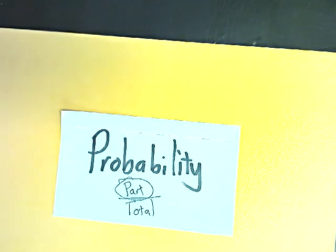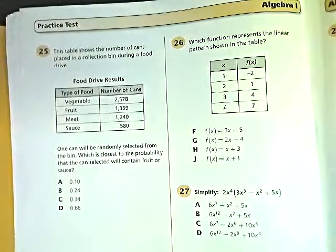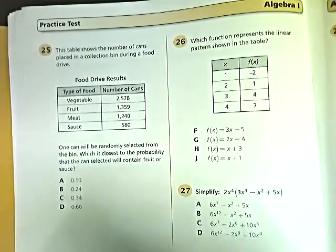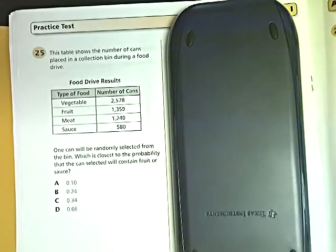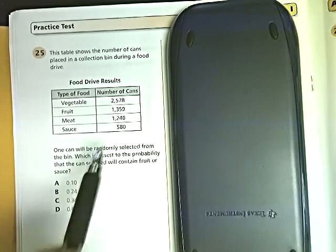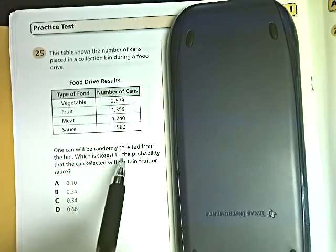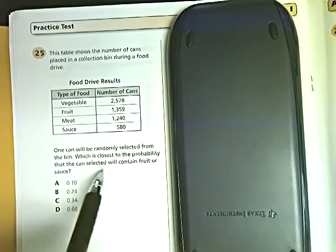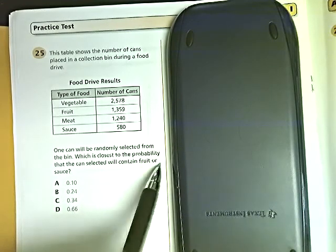Let's look at one real fast. Number 25 gives you this nice graph. One can will be randomly selected from the bin. These are the things in the bins. What is closest to the probability that the can collected will contain fruit or sauce?